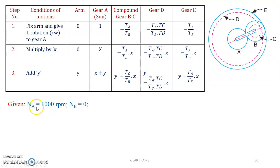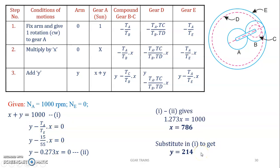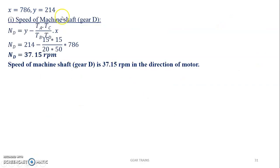From the tabular method, gear A rotates at 1000 rpm and gear E is fixed. Using the table, speed of gear A is x plus y, and the expression for gear E gives us a second equation. From these two expressions, x plus y equals 1000 and the fixed gear condition gives us the value of x and y. Substituting into the expression for gear D, the speed of the machine shaft comes out to 37.15 rpm in the direction of the motor.